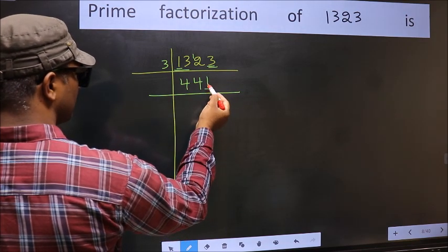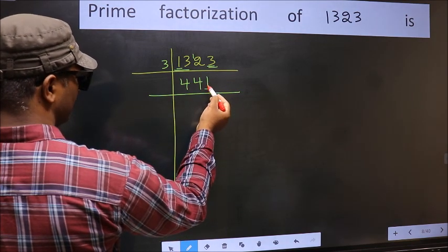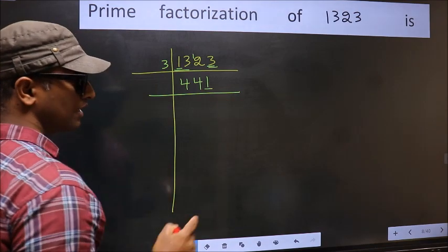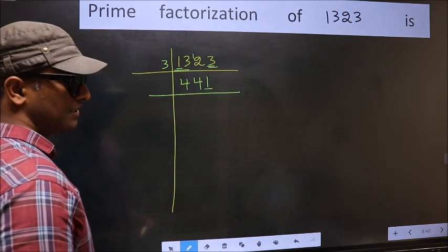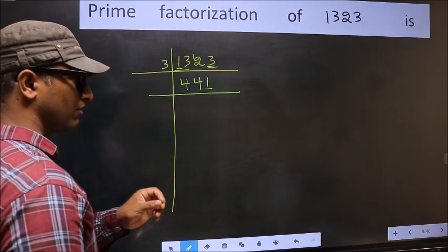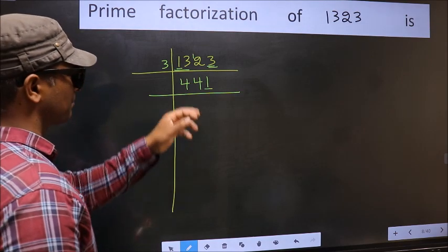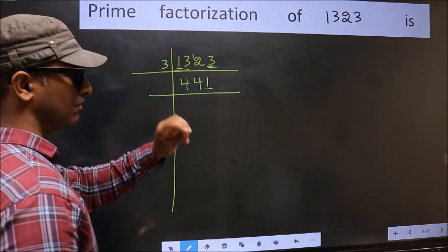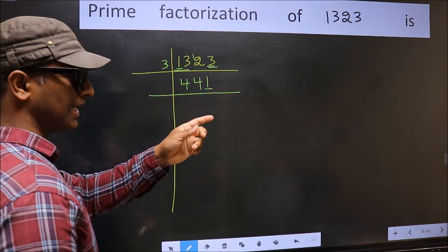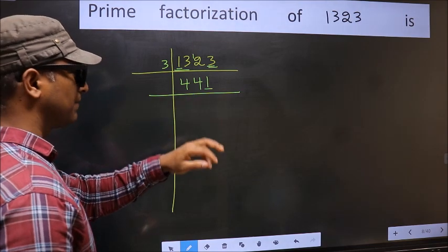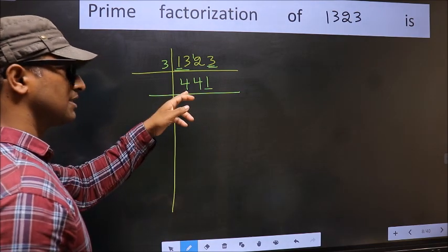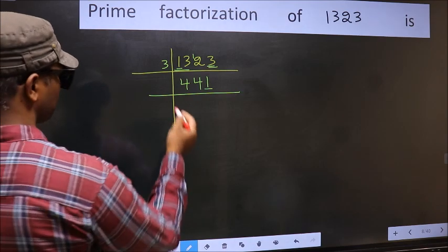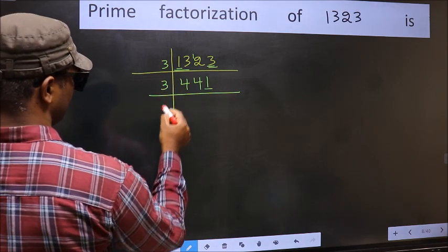Now the last digit 1 is not even, so this is not divisible by 2. To check divisibility by 3, we add the digits: 4 plus 4 plus 1, we get 9. 9 is divisible by 3, so this number is also divisible by 3. So take 3 here.